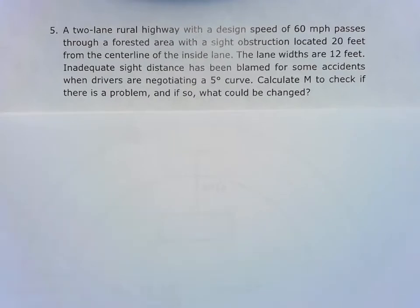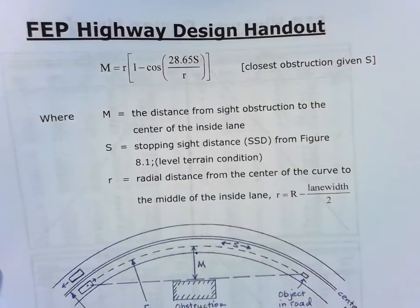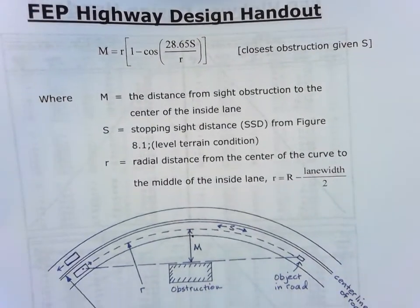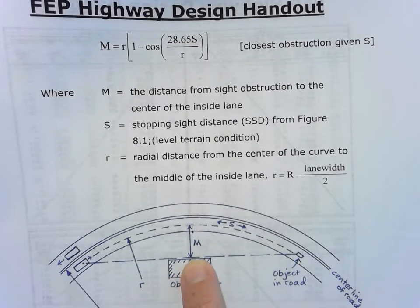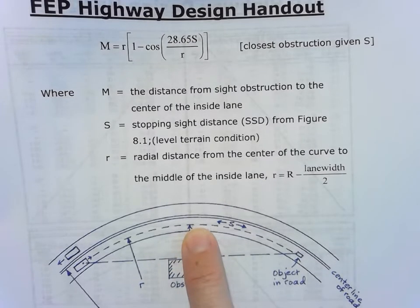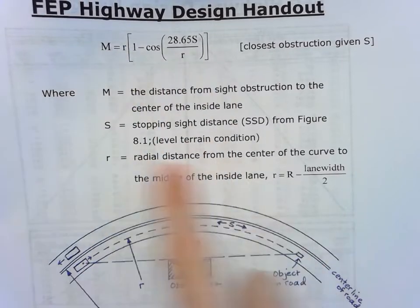Let's start off by looking at the formula sheet, remembering what M is defined as, and we have this nice drawing here of that horizontal site distance where M is defined as the distance from the edge of that obstruction to the center of the inside lane, and we find that using these components.